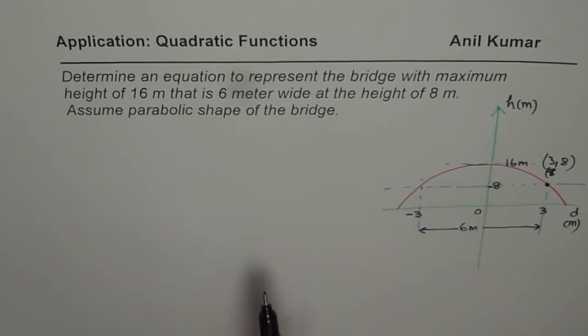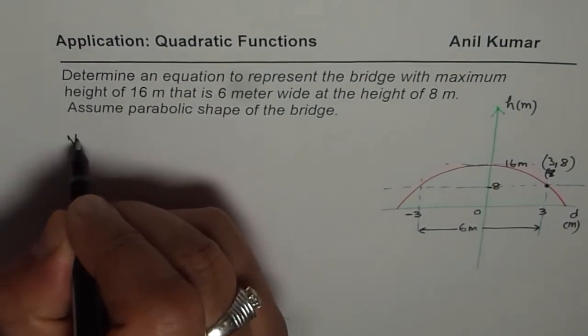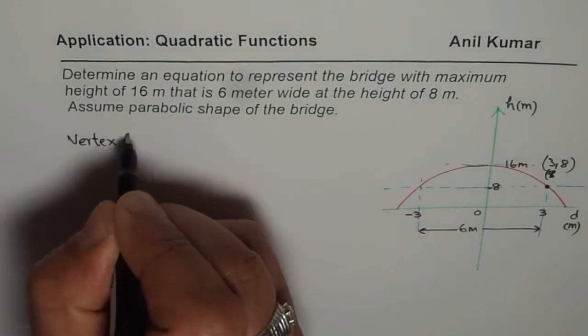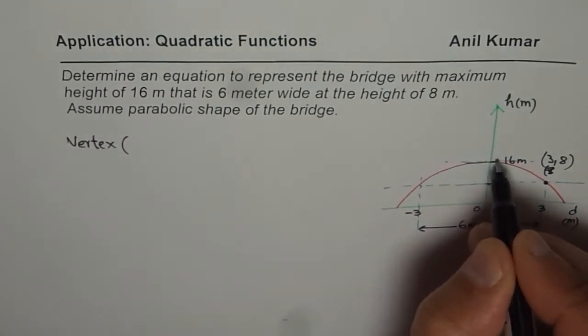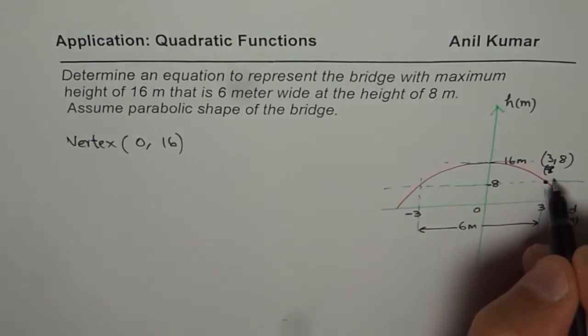Now I think it is very simple to write down the equation for the bridge itself. Bridge with vertex at, so we will say vertex for the bridge is at 0, 16. 0, 16. And we identify one point, well this one, we could take this point also. How does it matter? Let me take this point now.